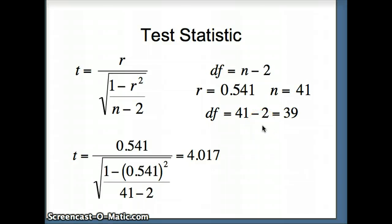Our degrees of freedom are N minus 2. That's a little different from earlier T's that we've used. Our N is 41. 41 minus 2 is 39. So our test statistic and our degrees of freedom are the two things we need to go ahead and find our P value.